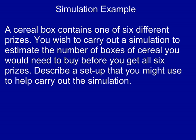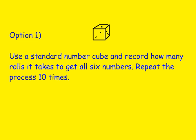Let's take a look at the first method. Since there are six different prizes, we could just use a standard number cube, record how many rolls it takes to get all six numbers, and repeat that process ten times. We roll the dice and record how many times it takes before we roll all six numbers — it could be six times at the minimum, or it could be 30, 40, or 50 times. We do this process ten times to see what it looks like. That is option number one.